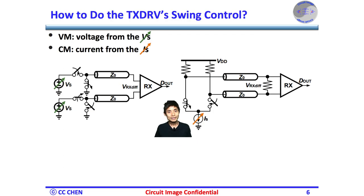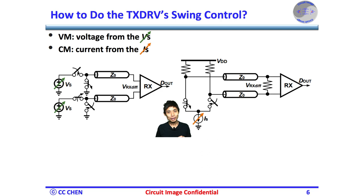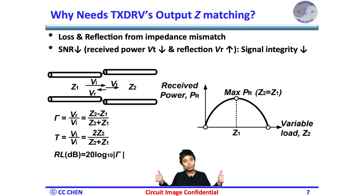We know why the TX driver should control the TX swing, but how? The voltage mode driver's output swing comes from the voltage source Vx; therefore, we must adjust Vx to provide a different output swing. Similarly, the current mode driver's output swing comes from the current source IS, and we adjust IS to provide a different output swing properly.